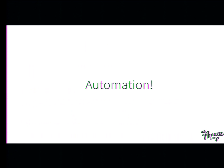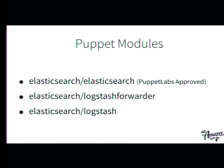Automation — who does Puppet? I'm just checking for Puppet now, so there wasn't really a reason to check Ansible and Salt and whatever. If you do Puppet, there are two really good things. To install Elasticsearch, use that module — it's awesome, it just works out of the box and you don't have to think about a lot of things. Logstash Forwarder also works well.